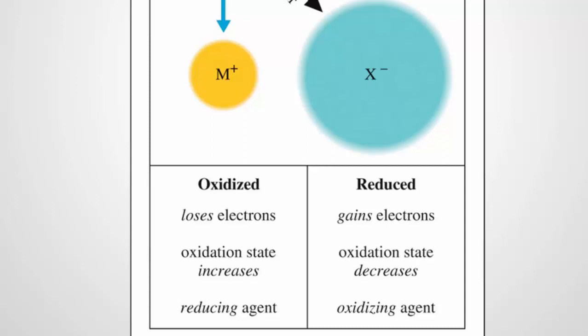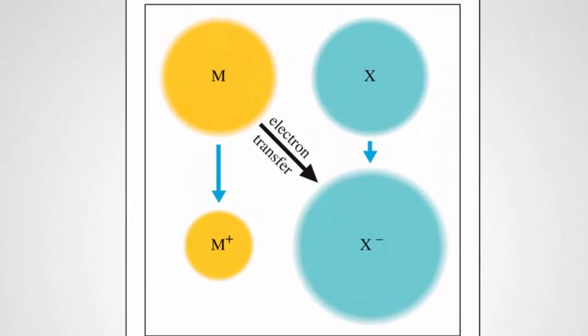So if oxidation is losing electrons, those electrons have to go someplace. They go to the thing that is going to gain them, that is going to be reduced. The thing that ends up losing electrons gives them to the other substance. That's the reducing agent. It's causing the other substance to be reduced. The thing that gains the electrons takes them from the other substance and causes the oxidation of that other substance. So it's the oxidizing agent. It's a relationship.